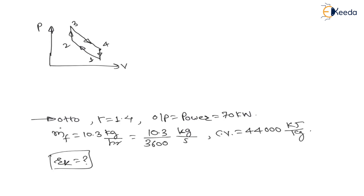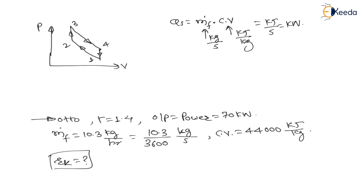For this Otto cycle they have given power output, calorific value, and mass of fuel. Heat supply is nothing but mass flow rate of fuel multiplied by calorific value. If mass flow rate is in kg per second and calorific value is in kJ/kg, then kg cancels and the answer is in kilowatts. Therefore, heat supply equals 10.3 divided by 3600 kg/s multiplied by 44,000 kJ/kg.